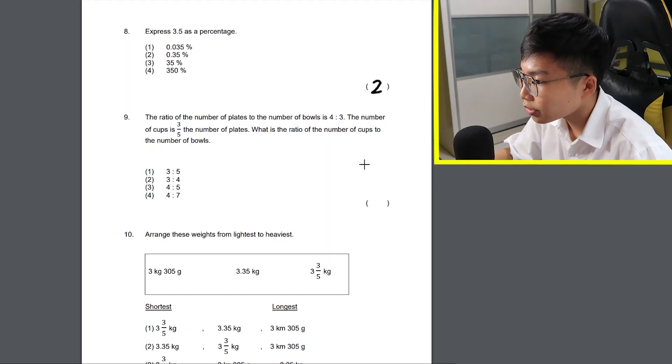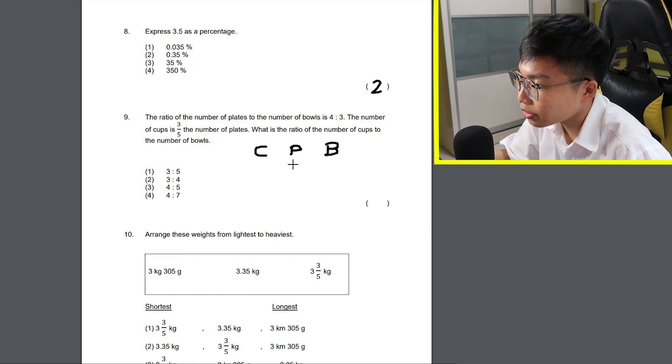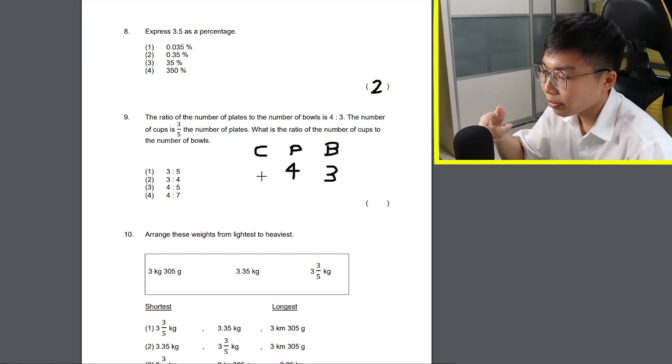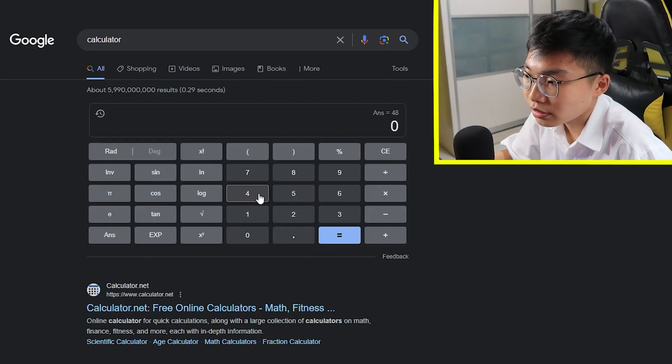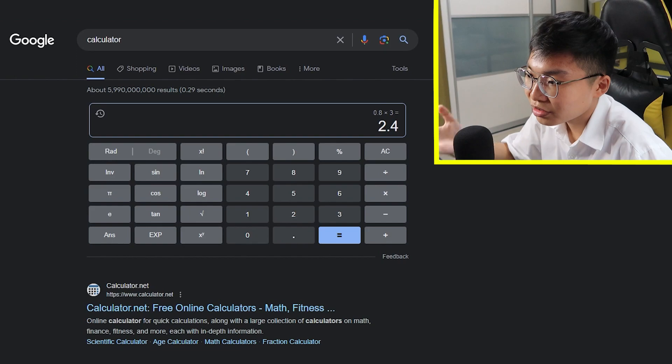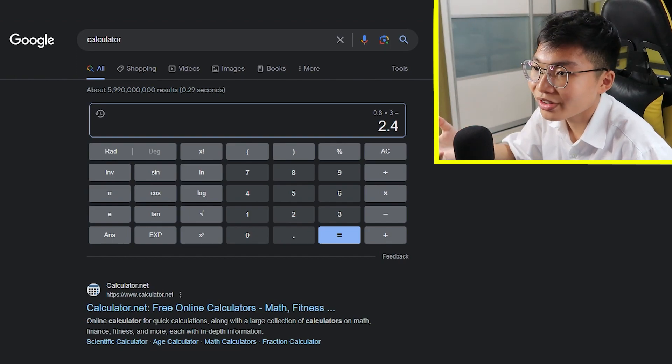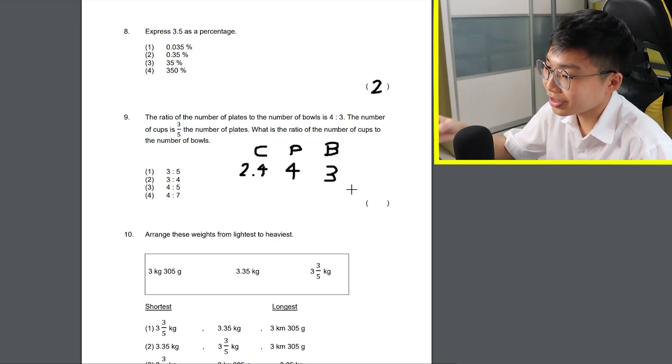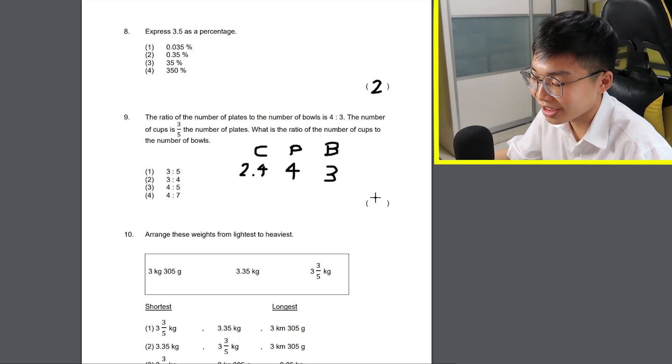Question 9. What is the ratio of the number of cups to the number of bowls? Okay, it's starting to get hard now. So there is 4 plates to 3 bowls. Then there's 3 out of 5 cups to plates. Huh? What? 4 divided by 5 times 3? It's 2.4. There's no 2.4 there. Oh no. You know what? 2.4 to 3 is pretty much 3 to 4. So let's just put number 2.